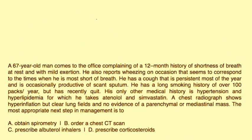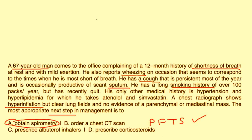Vignette 1: A 67-year-old presents with a 12-month history of shortness of breath, wheezing, persistent productive cough, and over 100 pack-year smoking history. Chest x-ray shows hyperinflation but clear lung fields. The most appropriate next step: options include obtain spirometry, CT of the chest, or prescribe albuterol or corticosteroids. Since we need to confirm the diagnosis first, the answer is A — obtain spirometry to perform PFTs.